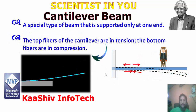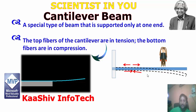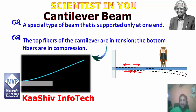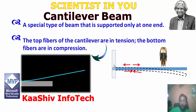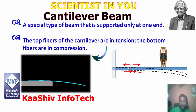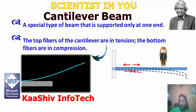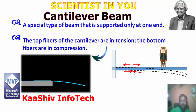Next is the cantilever beam. A cantilever beam is a special type of beam that is supported only at one end. The top fibers of the cantilever beam are in tension, and the bottom fibers are in compression. That is why it is called a cantilever beam.